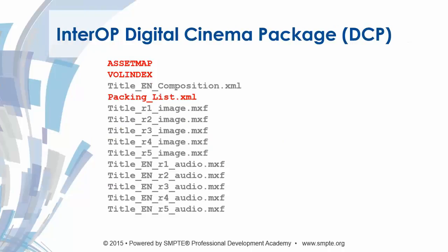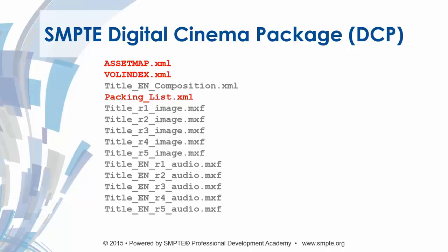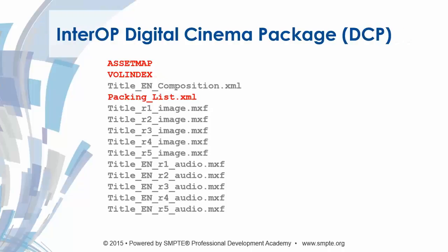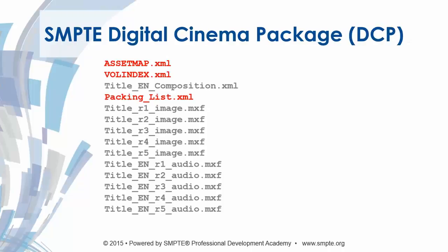Here I'm showing you an Interop DCP package, and if I flip to the SMPTE, you'll see that the .xml extensions are on the asset map and volume index. The asset map, volume index, and packing lists are represented in red. Those files along with the others represent the DCP. The file names in gray represent the CPL or composition.